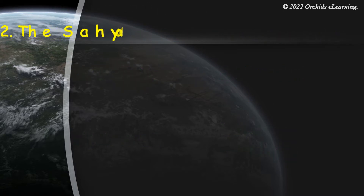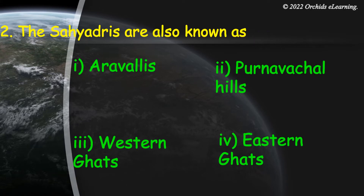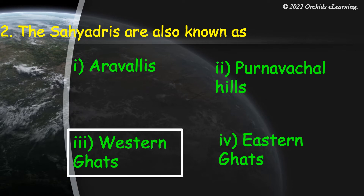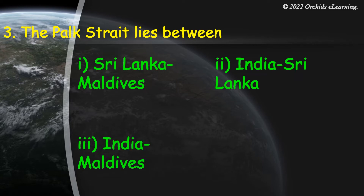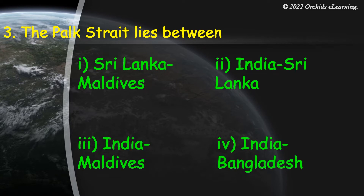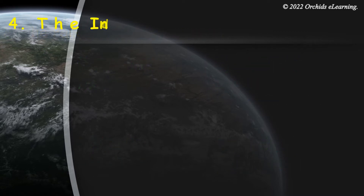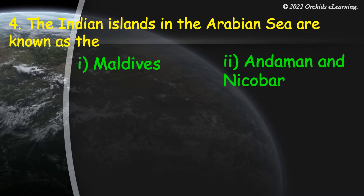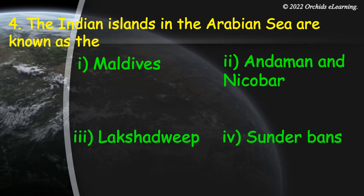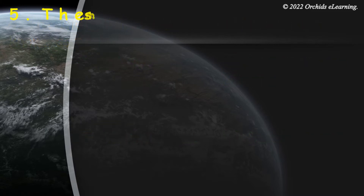Choose the correct answer. The southernmost Himalayas are known as the Shivaliks. The Sahyadris are also known as the Western Ghats. The Palk Strait lies between India and Sri Lanka. The Indian islands in the Arabian Sea are known as the Lakshadweep. The smallest state is Goa.